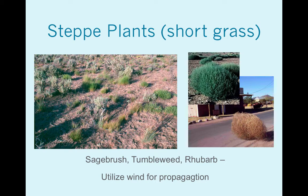Here are some steppe plants. You can see sagebrush on the left and tumbleweed on the right. Tumbleweed, when it's still green and attached to the ground, is like a cabbage with a stubby stalk. Once it pollinates and produces seeds, the plant stops sending nutrition to its leafy area, it dries out, snaps off, and starts tumbling — scattering its seeds across the steppe as it rolls. A cool adaptation for propagation.